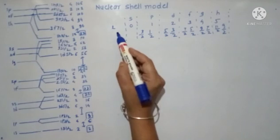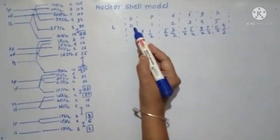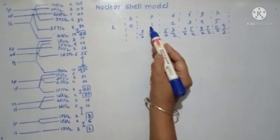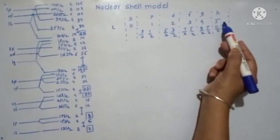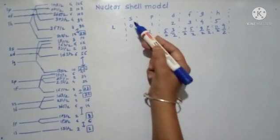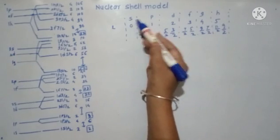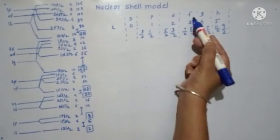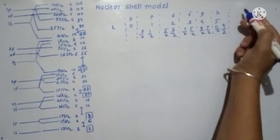For this, you must know that the values of L ranging from 0, 1, 2, 3, 4, 5 are related with the orbits S, P, D, F, G, N, H and so on.